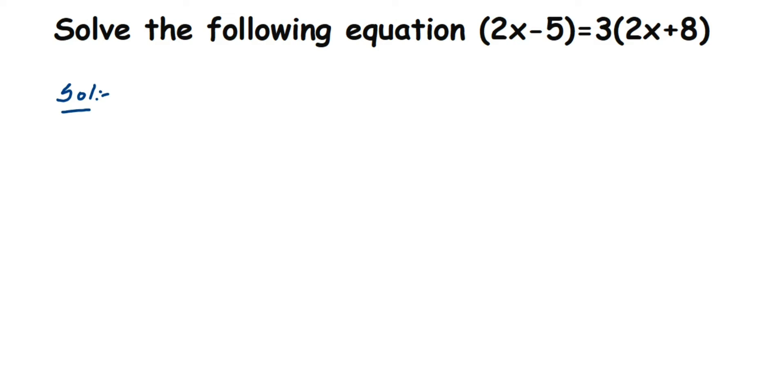So let me write down the equation first. It is 2x minus 5 equals 3 into 2x plus 8. Whenever we solve an equation, we have to go for the BODMAS rule. First, we have to open the brackets—in BODMAS, the first is B, which is bracket open.